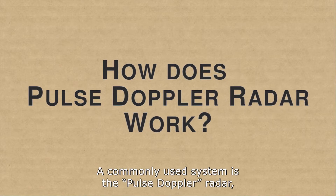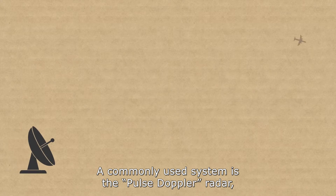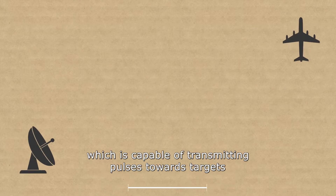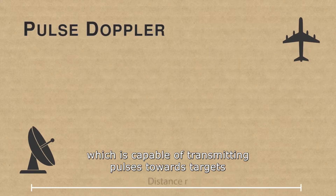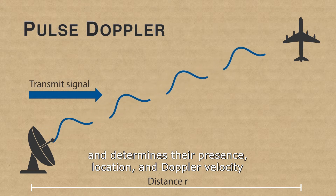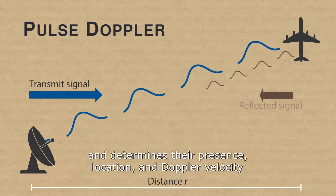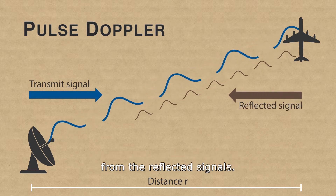A commonly used system is the Pulse Doppler radar, which is capable of transmitting pulses toward targets and determines their presence, location, and Doppler velocity from the reflected signals.